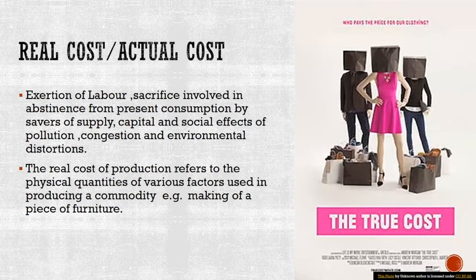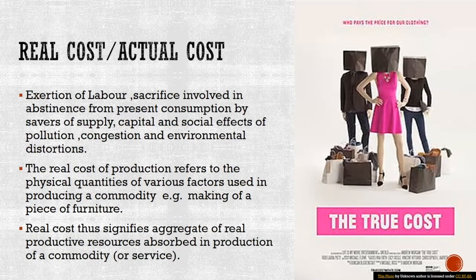The real cost of production also takes into account the physical things that we put into producing something. For example, if we are producing a piece of furniture, then wood, nails, varnish — whatever you are using to produce that piece of furniture — will contribute to the real cost of that product. It also signifies the total productive resources being used in production of a commodity, including the time of the person who is producing it. He is spending his time in producing that quantity rather than entertaining himself, so that also contributes towards the cost.